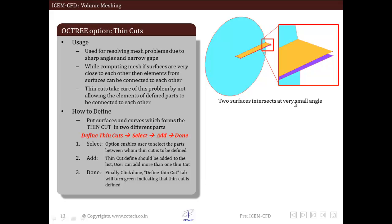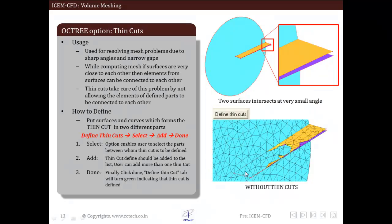These two surfaces intersect at very small angle. Case one is mesh created without using thin cuts. It can be observed that sharp angle is not captured and element jump from side one to side three.